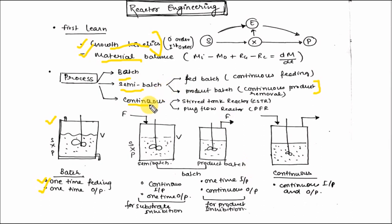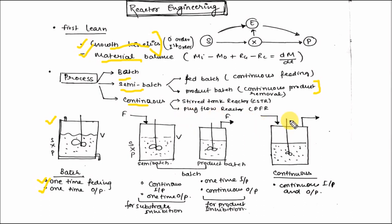Continuous processes can be divided into two parts: stirred tank reactor and plug flow reactor. In a continuous stirred tank, mixing is done by a stirrer or impeller. In a plug flow reactor, mixing is achieved by the flow of air.